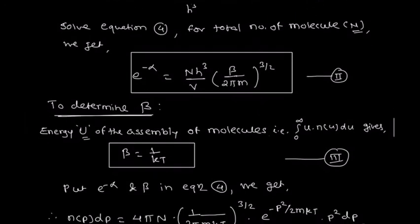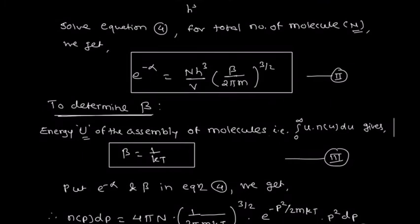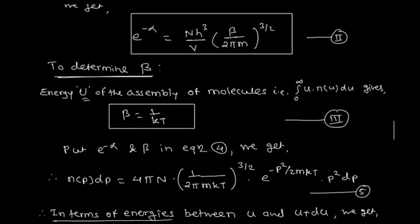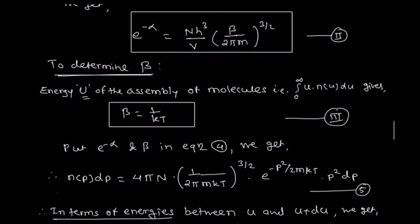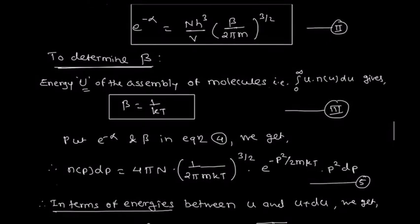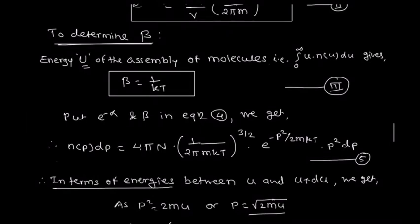The next step is to substitute the constants into equation 4, which is in terms of momentum. After substituting e^(minus alpha) and beta, the number of molecules having momentum between p and p+dp becomes: n(p)dp equals 4π·N·(1/2πmkT)^(3/2) · e^(minus p²/2mkT) · p²·dp. This is equation 5. Now we find equation 5 in terms of energies.